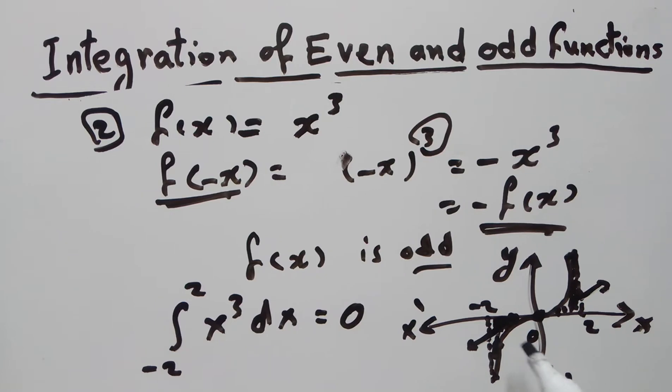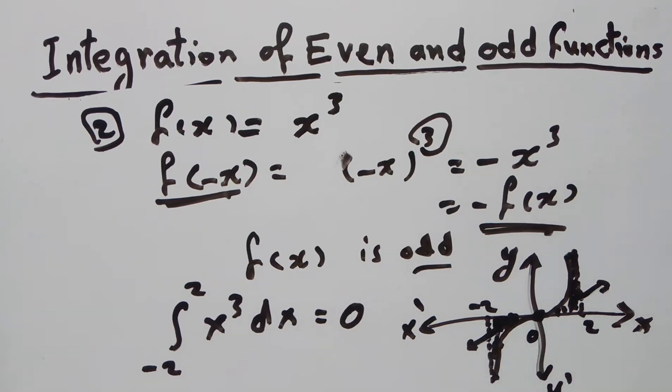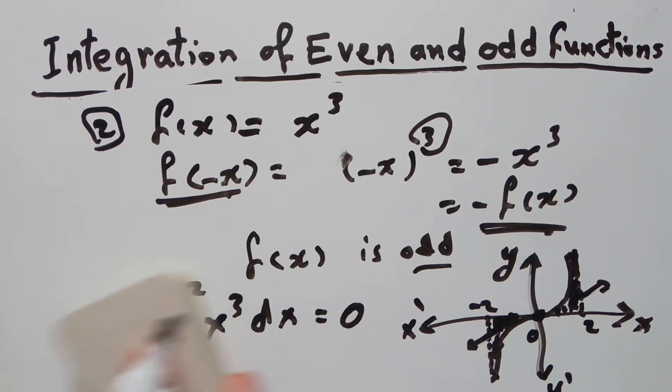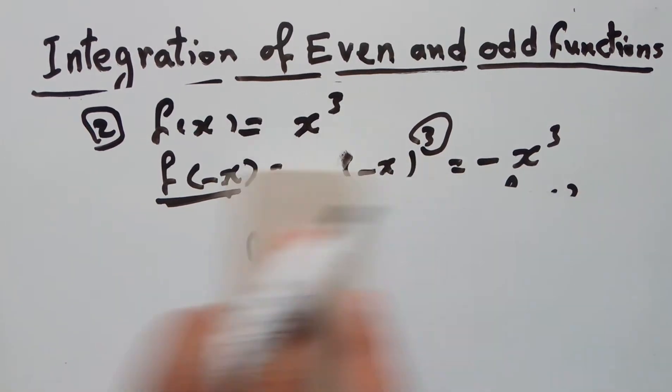If the graph is symmetric about the origin, the function is odd. If it is not symmetric about either the y-axis or the origin, then the function is neither odd nor even.